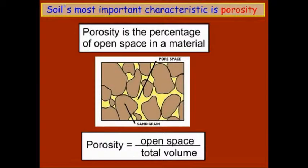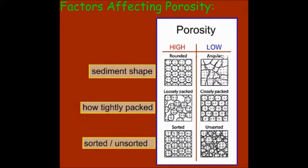Soil's most important characteristic is porosity, which is the percentage of open space in the material. You can calculate porosity as the open space divided by the total volume. A highly porous substance would have rounded sediments that are loosely packed and sorted. A substance with low porosity would have angular shaped sediments that are closely packed and unsorted, such as those from a glacier.